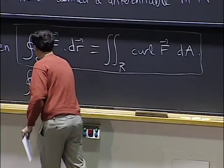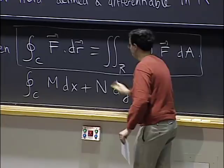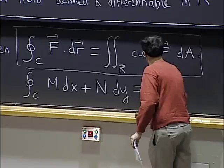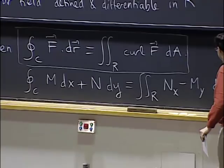If you want me to write it in coordinates: the line integral in terms of the components is the integral of m dx plus n dy, and the curl is n_x minus m_y, times dA.